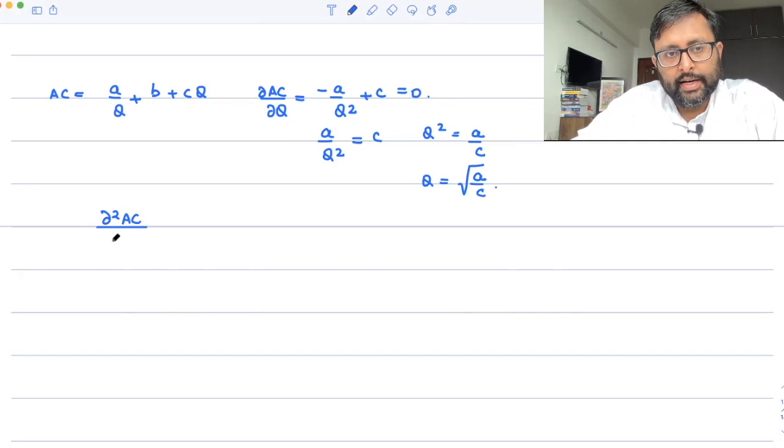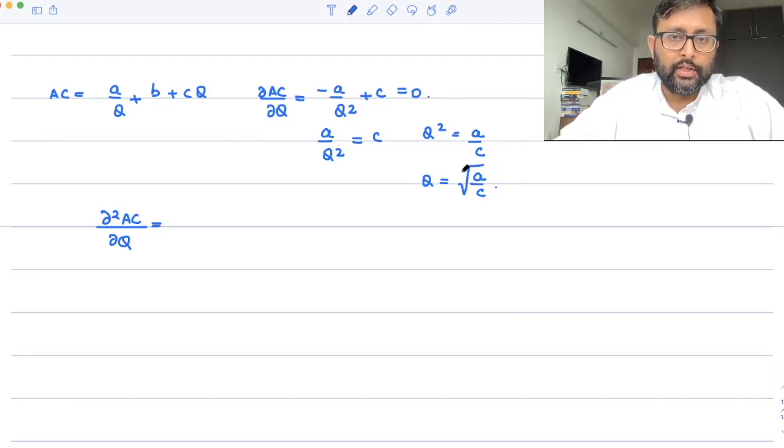d²AC/dq², right? So in order to find out whether this is actually giving you a min or not, this is the output at the critical point, right? So I need to just see whether we are getting d²AC/dq² greater than 0 or not for this point to show actually a minimum.